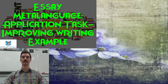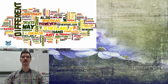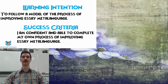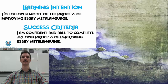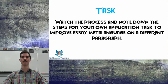This essay meta-language application task is about how to improve your writing. I'll show you the steps and an example of mine. These are all the words we're going to be trying to use. The learning intention for this lesson is to follow a model of the process of improving essay meta-language, and then do your own. The success criteria is: I'm confident and able to complete my own process of improving essay meta-language. Your task is basically to watch the process and note down the steps so you remember what you need to do, and this should help you when you're doing this task on your own piece of writing later on.